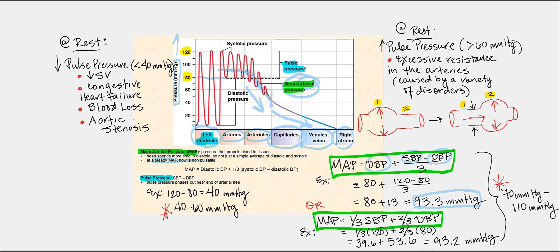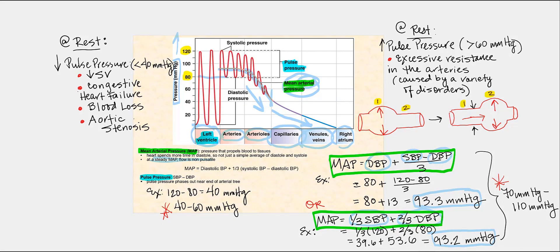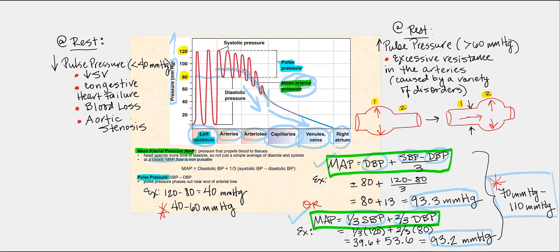There's another way I prefer — it's easier: take one-third of the systolic blood pressure and two-thirds of the diastolic blood pressure, and add those values together. I calculated 93.2 millimeters of mercury, and rounding off, we get 93 millimeters of mercury. Whether you use either formula, you should come up with the same value. Ideally, MAP should be between 70 and 110 millimeters of mercury, because this represents the pressure needed to push blood forward and propel it to reach our tissues and return to the right side of the heart.